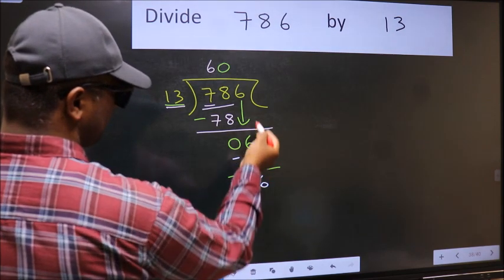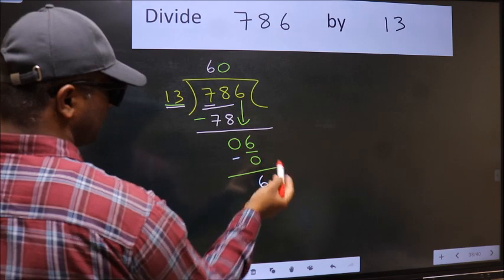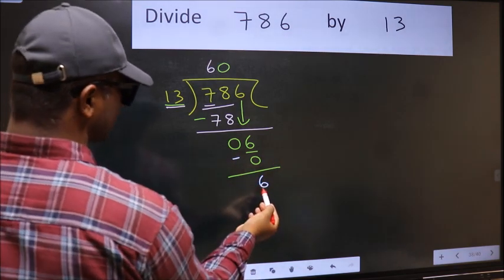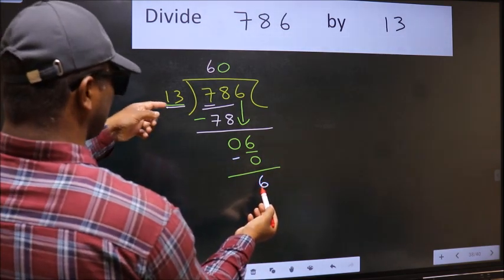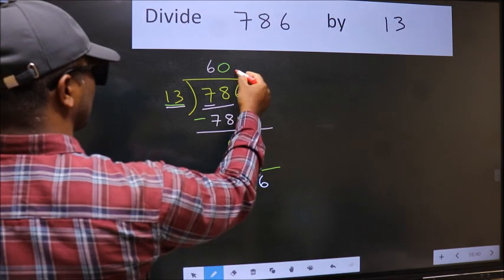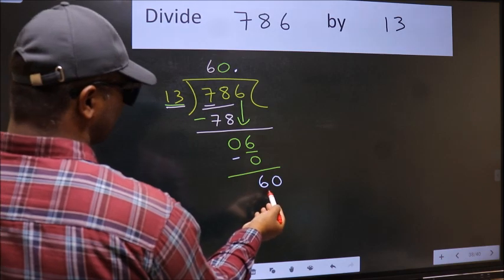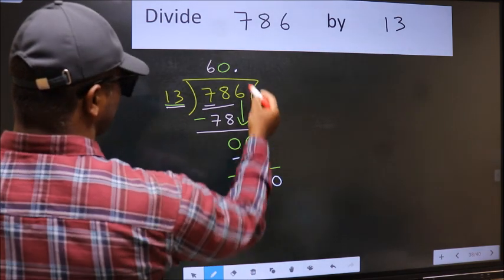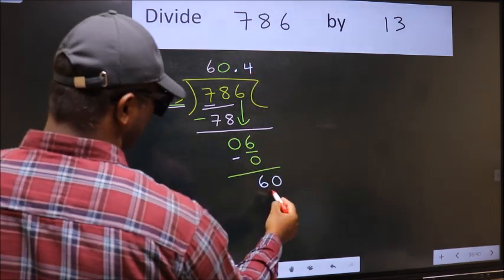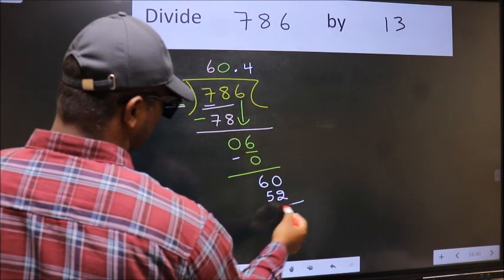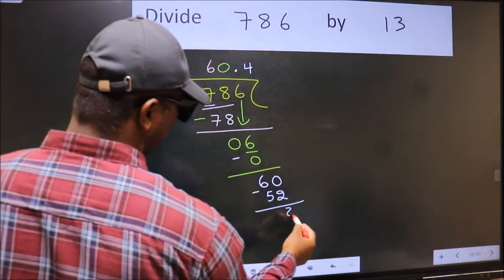Over here, we did not bring any number down. And 6 is smaller than 13, so now we should take 0. So 60. A number close to 60 in 13 table is 13 times 4, which is 52. Now we should subtract, we get 8.